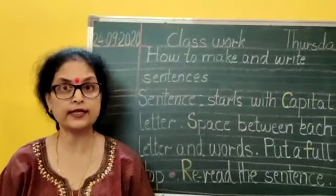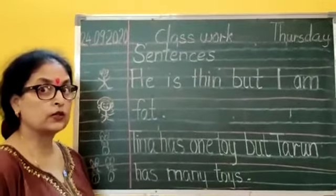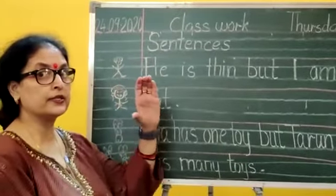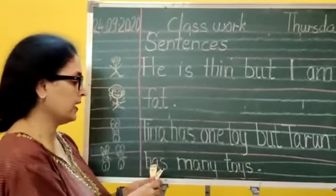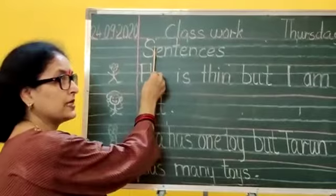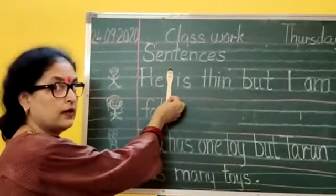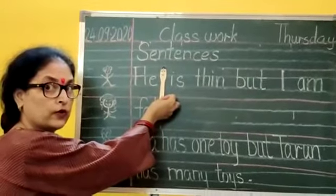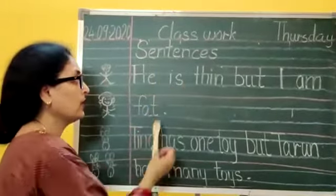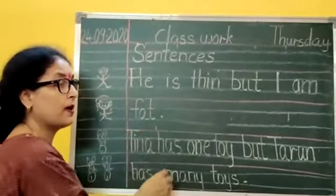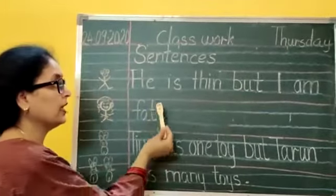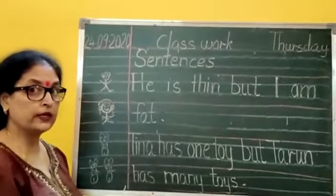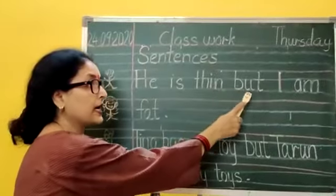Now I will show you how to write a sentence. The sentences I am going to teach you — this is the way we will be doing it. It is always starting with a capital letter, followed by a small letter. See, Popsi is giving some space — putting the proper space. This much space you have to give in each letter and each word. Now let's read: He is thin but I am fat. See the space between each word, and a full stop. Again read: He is thin but I am fat.